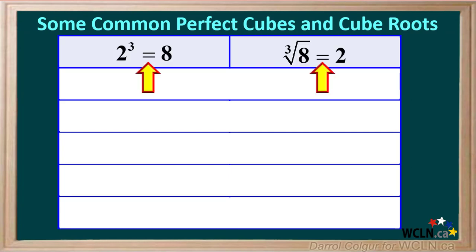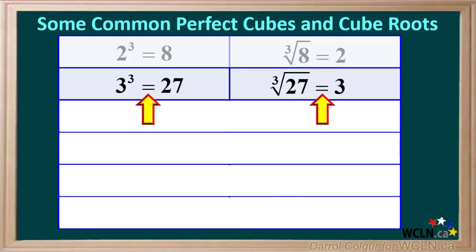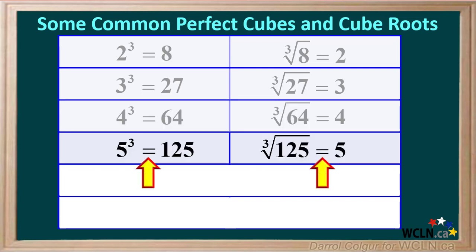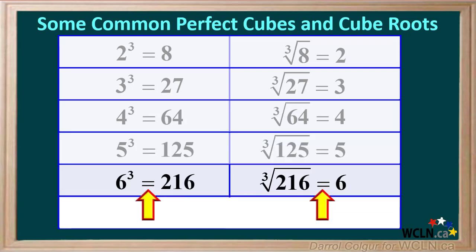2 cubed is 8, and the cube root of 8 is 2. 3 cubed is 27, and the cube root of 27 is 3. 4 cubed is 64, and the cube root of 64 is 4. 5 cubed is 125, and the cube root of 125 is 5. 6 cubed is 216, and the cube root of 216 is 6.